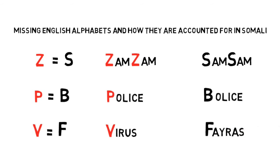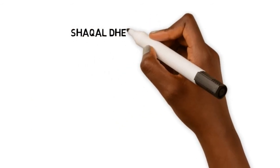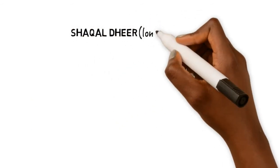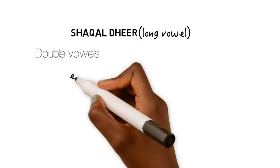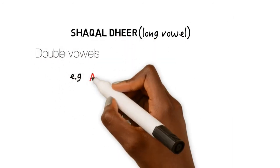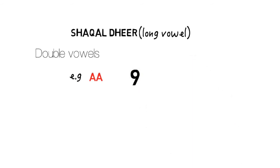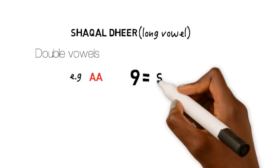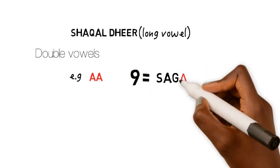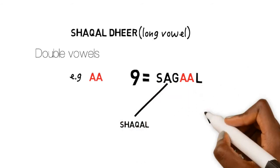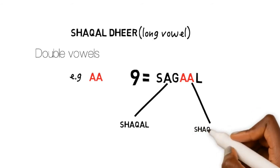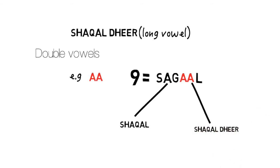Moving on, you might be wondering why Somali has long vowels and short vowels and what the difference might be. A good example of a word with both a long vowel and a short vowel is the number nine, which in Somali is called Sagal. The first A is a short vowel, hence it becomes 'Sag', and the last A is a long vowel, hence it becomes 'gal', so the word is pronounced Sagal.